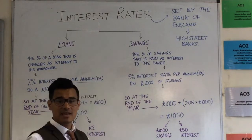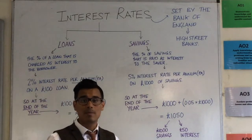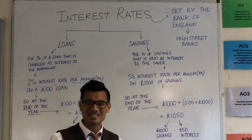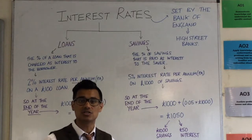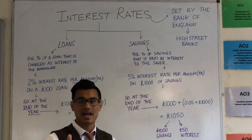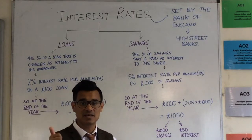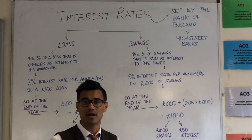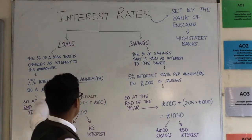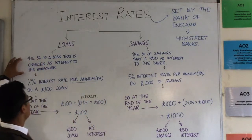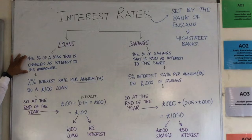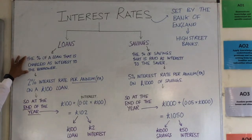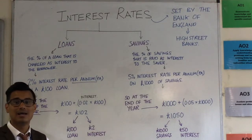Interest rates affect people or businesses — consumers or producers — if they have savings, or they have a loan, or they want to take a loan out. Let's start with the loans side. The definition of a loan interest rate would be the percentage of a loan that is charged as interest to the borrower.